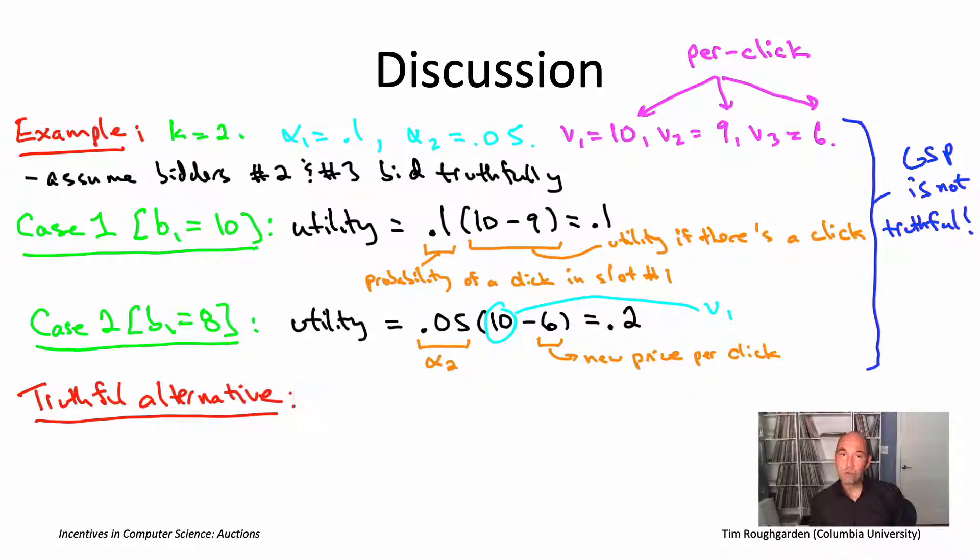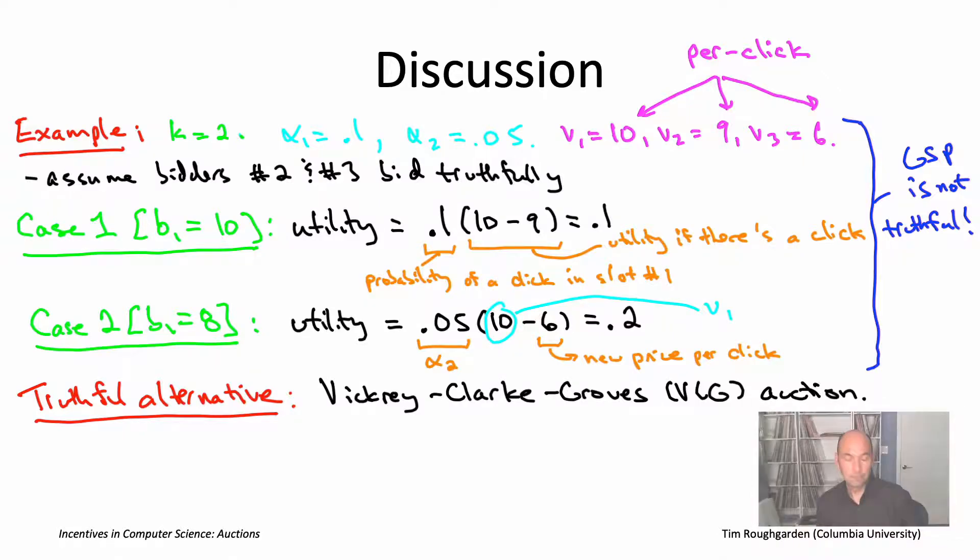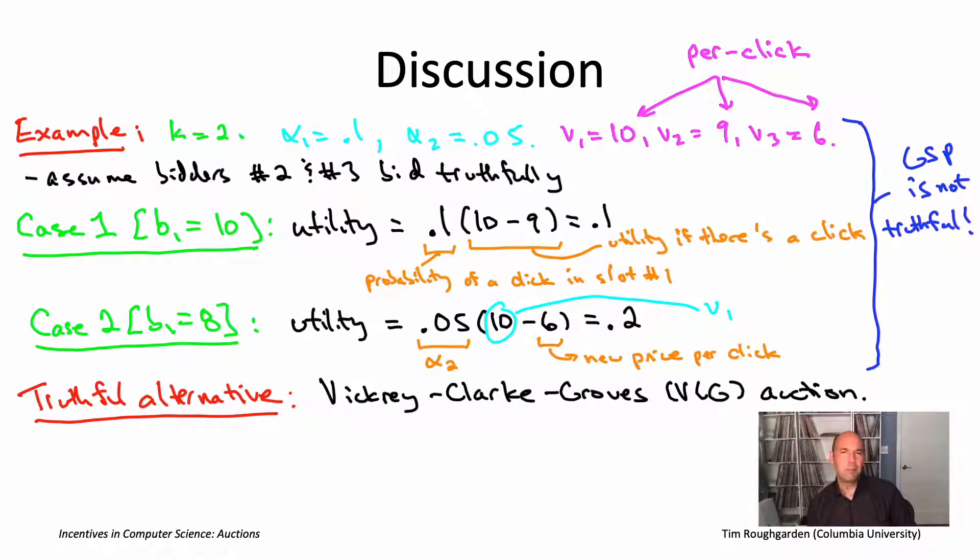There is another sponsored search auction that is truthful, just as truthful as the Vickrey auction. It's an auction known as the VCG auction. The V is for Vickrey, and then C and G are for Clarke and Groves, who are two other economists who extended Vickrey's original idea a little bit later, in the early 70s.